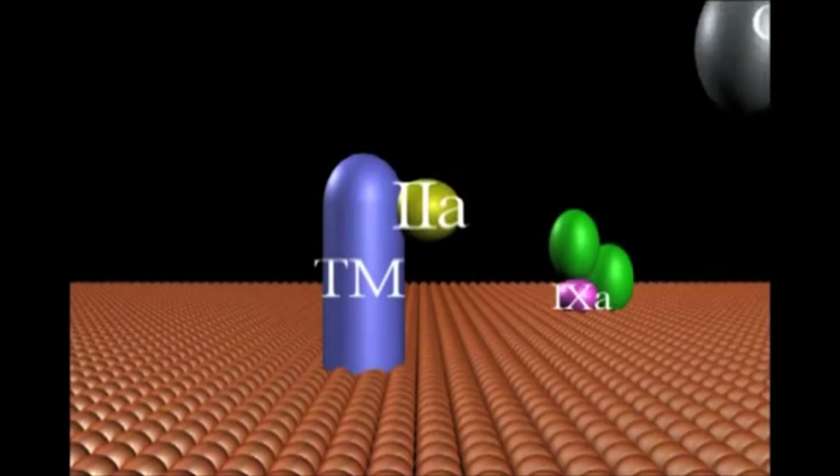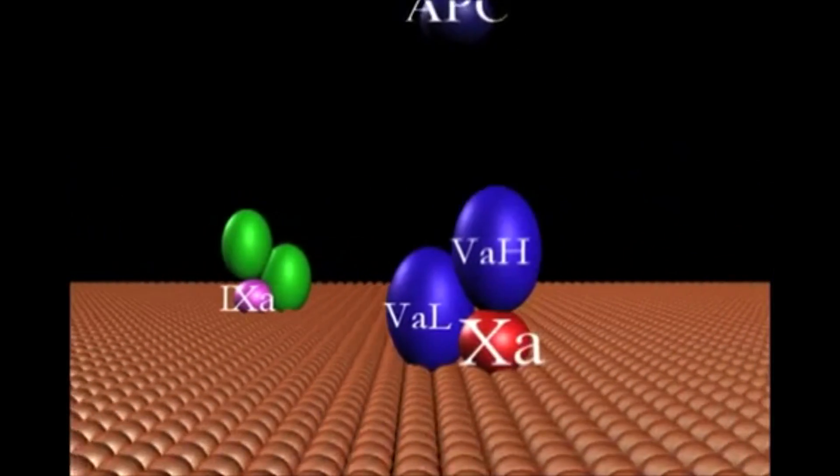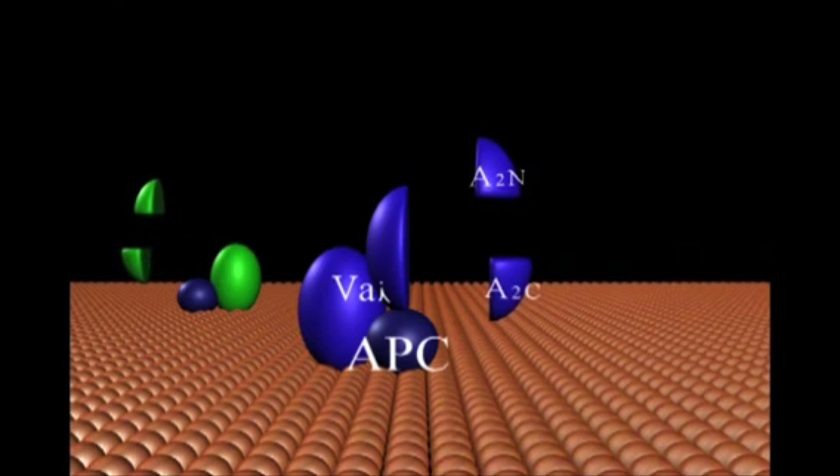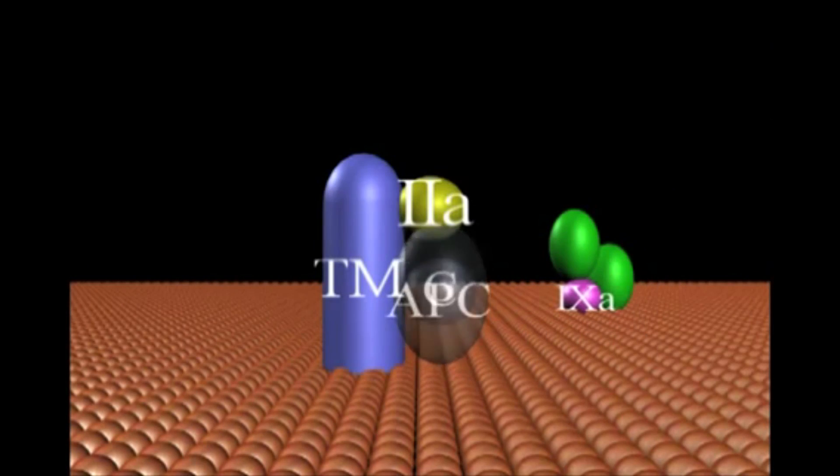This enzyme downregulates the reaction by competitively binding and cleaving the two active cofactors in their respective A2 regions, leading to inactivation of the intrinsic factor 10a complex (8a, 9a) and prothrombinase (5a, 10a) complexes.